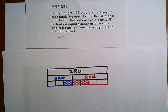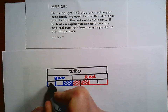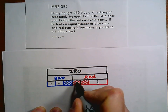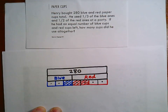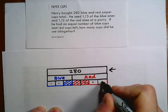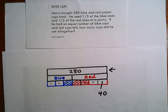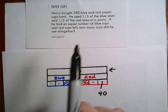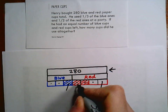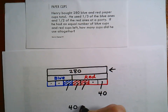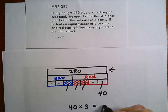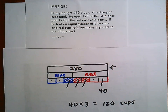Now you can see the power of the tape diagram: all together we have one, two, three, four, five, six, seven bricks, and they total 280. That tells you one brick has to be 40 — simple division. Then going back to the question: how many cups did he use? You can count three of those bricks, so that's 120. And that's all there is to it.